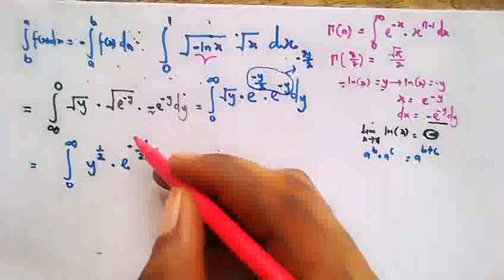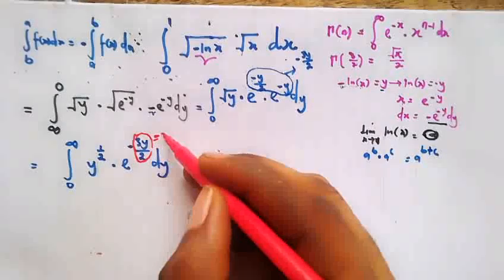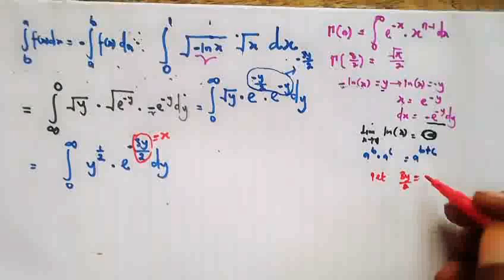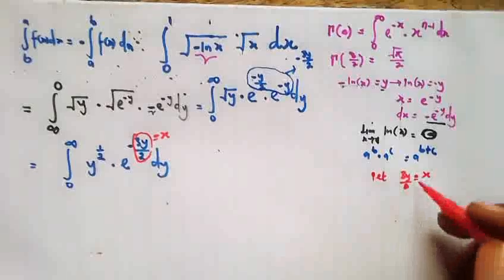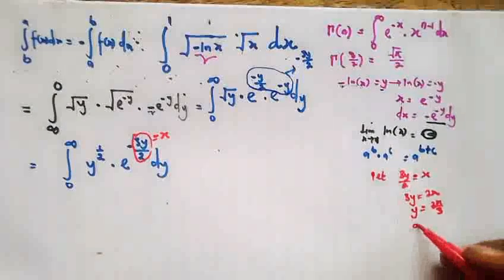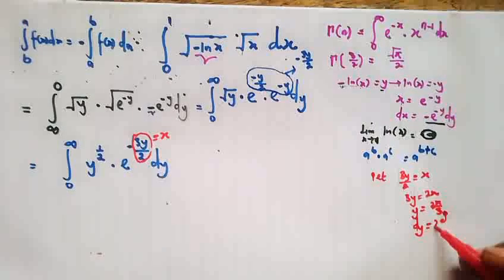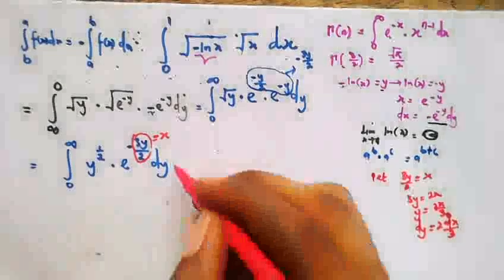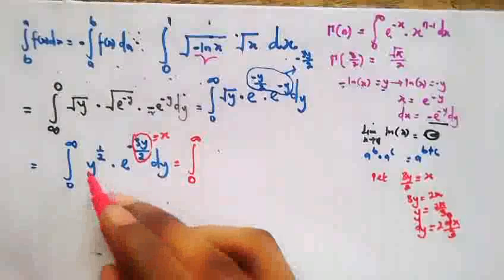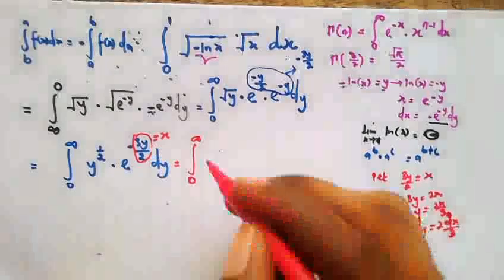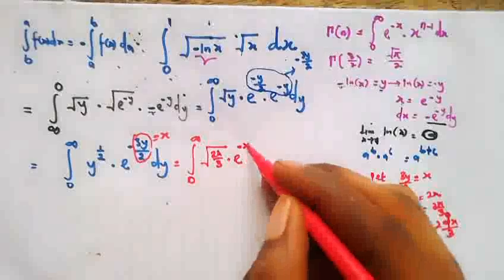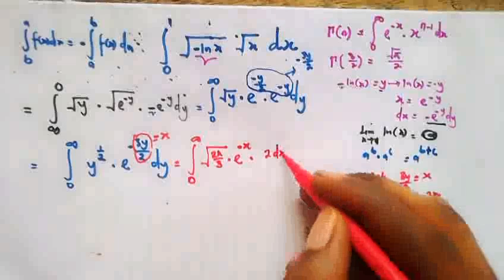We make a second substitution: let 3y over 2 equal x. Cross multiplying gives 3y equals 2x, so y equals 2x over 3. Differentiating both sides, dy equals 2 dx over 3. The limits remain the same, from 0 to infinity. Our y becomes 2x over 3, so the square root of y becomes the square root of 2x over 3, and e raised by negative 3y over 2 becomes e raised by negative x.